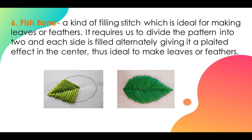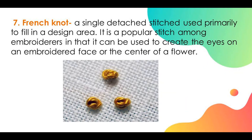Fishbone requires dividing the pattern into two, and each side is filled alternately, giving it a plaited effect in the center — thus ideal to make leaves or feathers. French knot. French knot is a single detached stitch used primarily to fill in a design area.